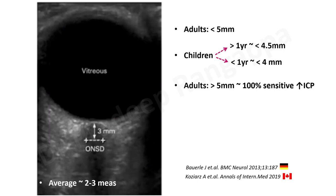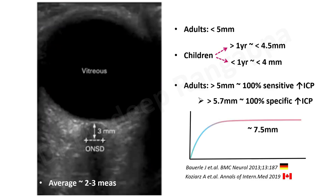Studies validating this test include one from Germany and a meta-analysis from a Canadian group in 2019. In adults, if the optic nerve sheath diameter is more than five millimeters, it is 100% sensitive for raised intracranial pressure. If it is more than 5.7 millimeters, it is 100% specific for raised ICP. The optic nerve sheath only enlarges to around 7 to 7.5 millimeters, after which it plateaus regardless of how much ICP increases. So: greater than 5mm — consider ICP high; greater than 5.7mm — definitive of raised ICP.